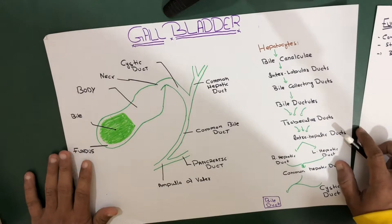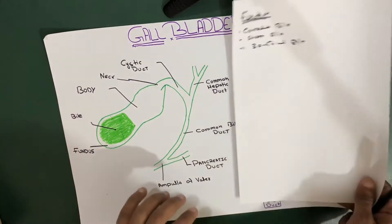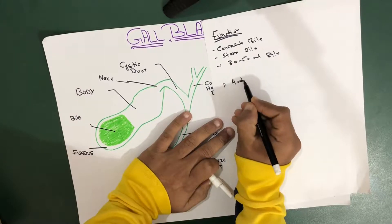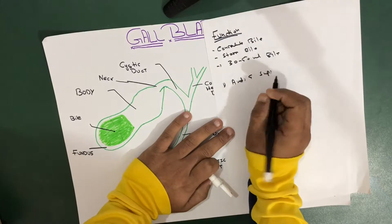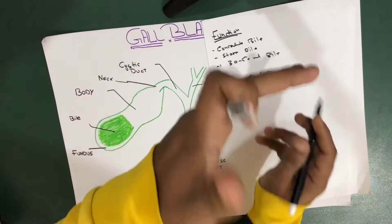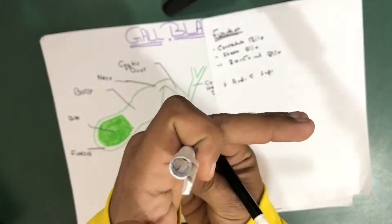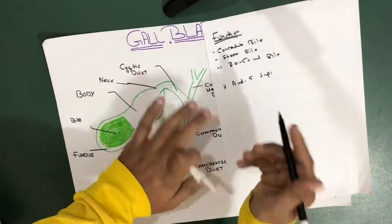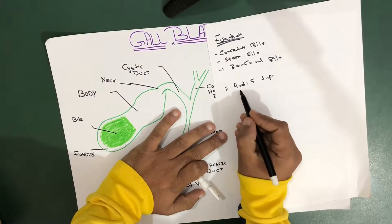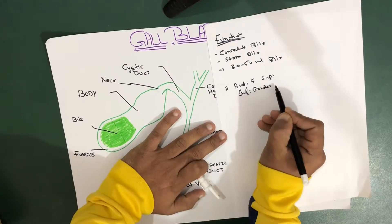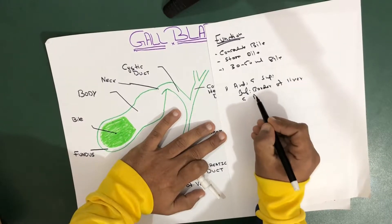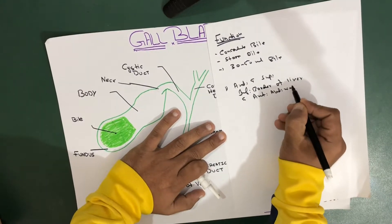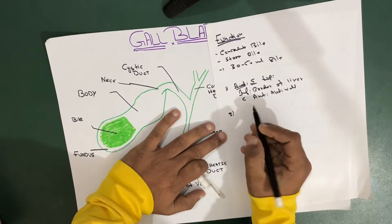Now let's talk about the boundaries. There are three main boundaries of your gallbladder. The first is the anterior and superior boundary: anteriorly and superiorly we have the inferior border of the liver and the anterior abdominal wall. If you go superior to the gallbladder, we have the inferior border of the liver, and the anterior abdominal wall comes anterior to it.